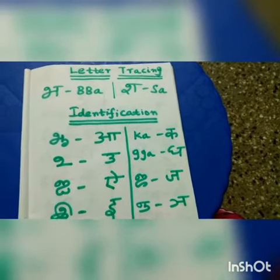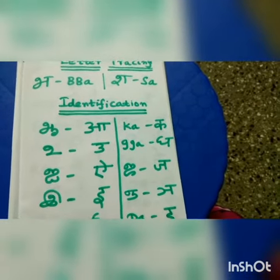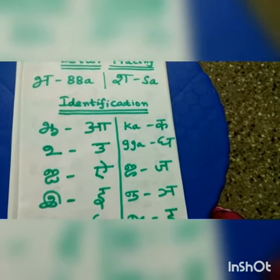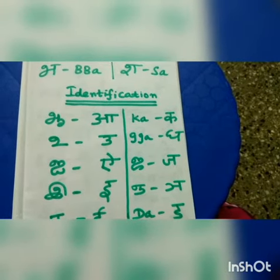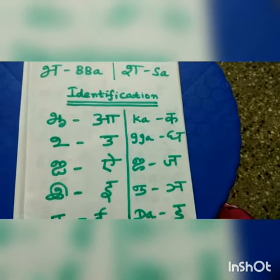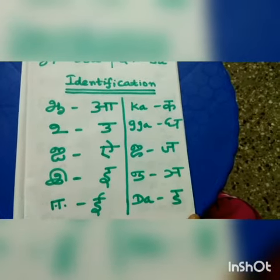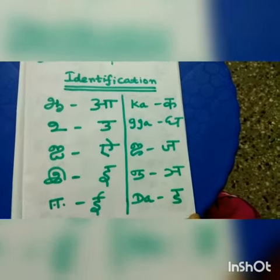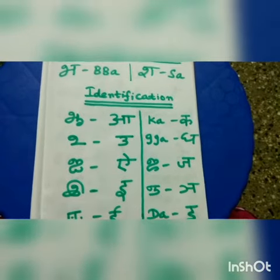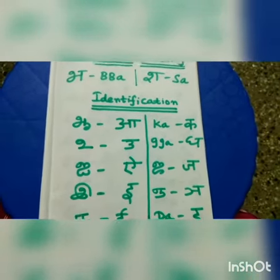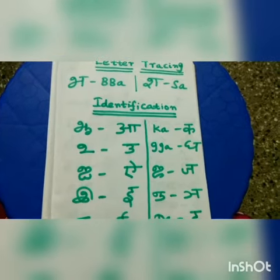These letters are similar with each other. Next, you will see the identification of vowels and consonants. See: A, U, I, E, E. K, G, J, Ny, D. Yeah, like this.